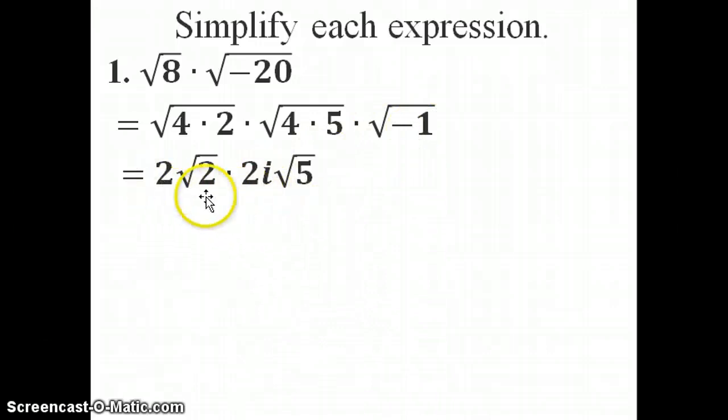Now I have to multiply what's on the outside of the radical. That's 2 times 2i, and I multiply what's on the inside of the radical, which in this case is, excuse me, a 2 and a 5. So I'll do that now.